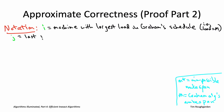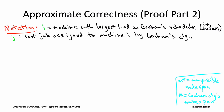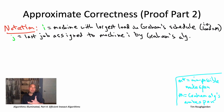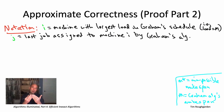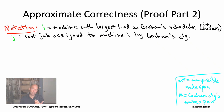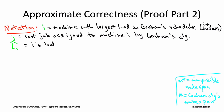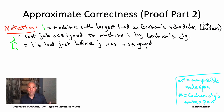Job J denotes the final job that the algorithm assigns to this most loaded machine I — the one that toggles its status. This job J may be the last one in the input or it may not. Think about rewinding Graham's algorithm to the iteration in which J is assigned. After this iteration, no more jobs get assigned to machine I. Also let L-hat sub I denote the load of machine I just before this job J was assigned to it.